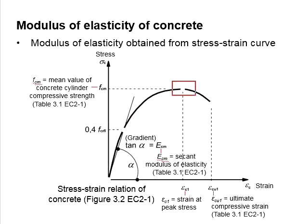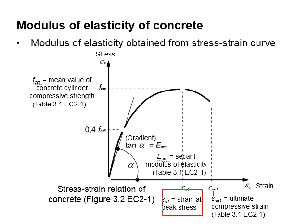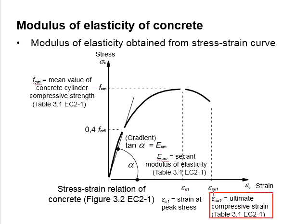The highest stress value is fcm, which is the mean value of the concrete cylinder compressive strength. The relevant values can be obtained from Table 3.1 in Eurocode 2. The strain at peak stress is represented by εc1, while the ultimate compressive strain is represented by εcu1, which can also be obtained from Table 3.1 in Eurocode 2 Part 1.